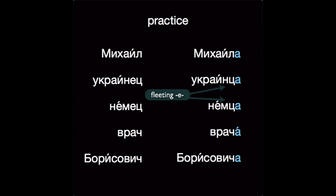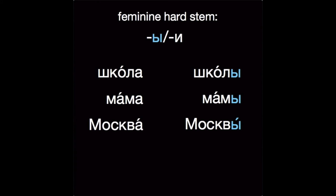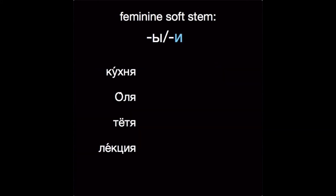Moving on, the basic genitive case ending for feminine nouns is И. For example: школа → школы, мама → мамы, Москва → Москвы. And of course, after soft stems, we'll spell that with the letter И: кухня → кухни, Оля → Оли, тётя → тёти, лекция → лекции.